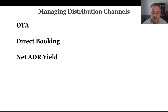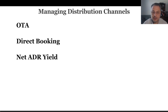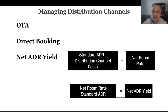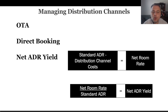When people do direct booking using your own website or call the property directly, there will be no intermediaries. That is the reason we use net ADR yields to understand the cost associated with distribution channels. Net ADR yield, which we discussed in Chapter 4, shows the percentage of sale of distribution channels relative to a normal room rate.